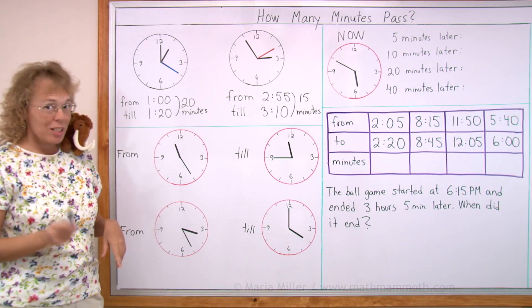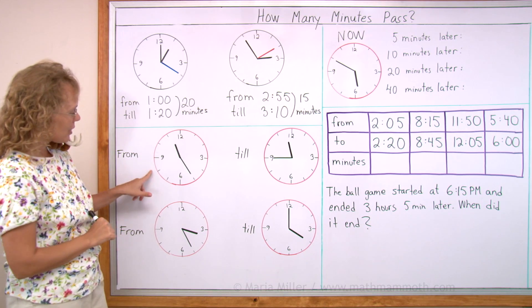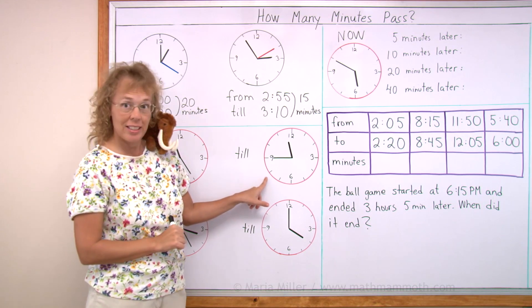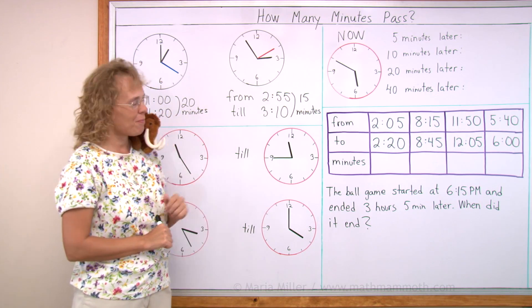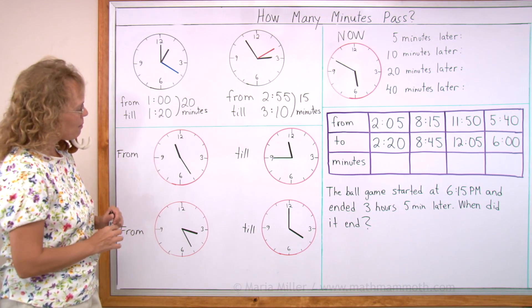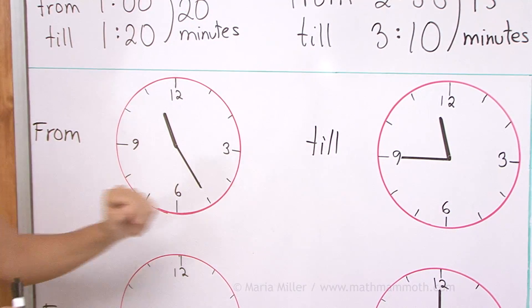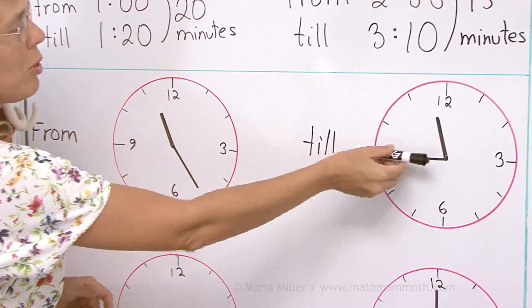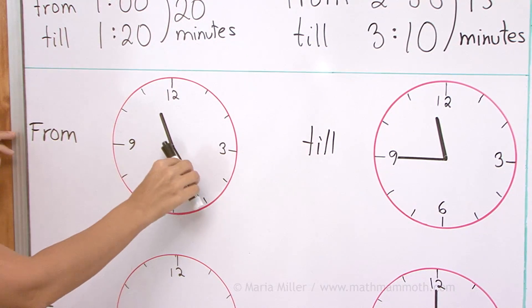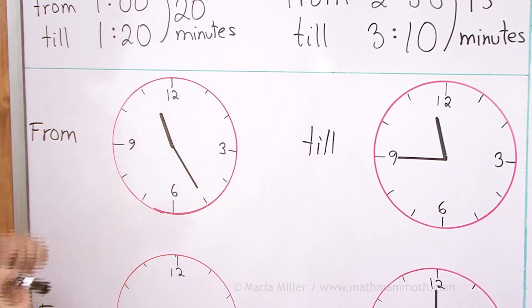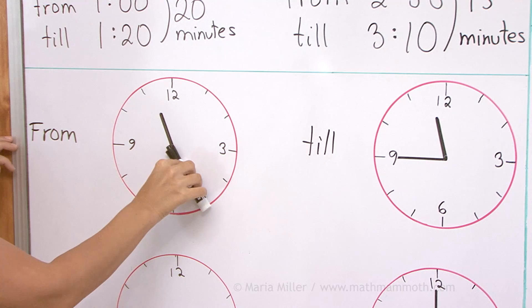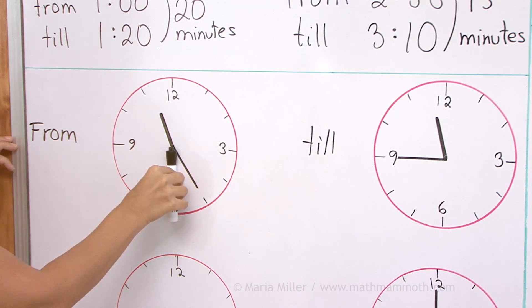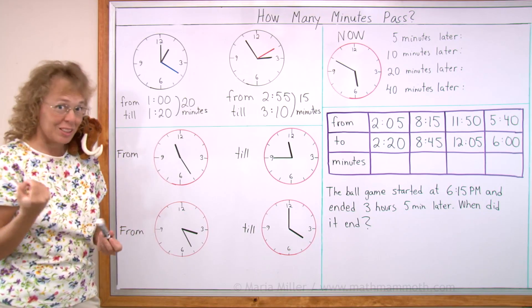Next, how many minutes pass from this time till this time? Okay, the minute hand is here. In my next clock it is pointing to 9. So let me just move it over here. It moves from here to here, here, here and here. Again, from here to here would be 5 minutes, and then 10, 15 and 20, right? 20 minutes.